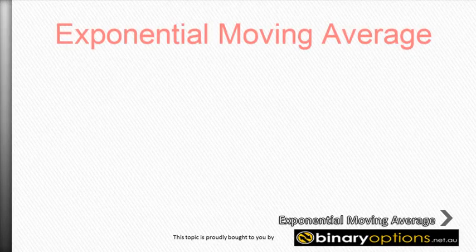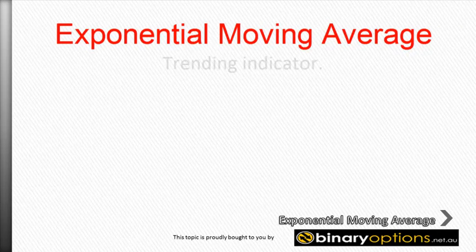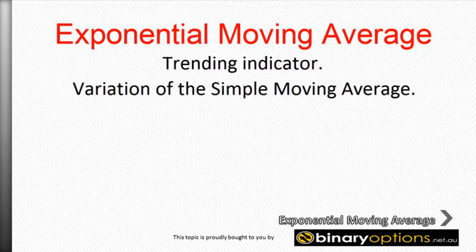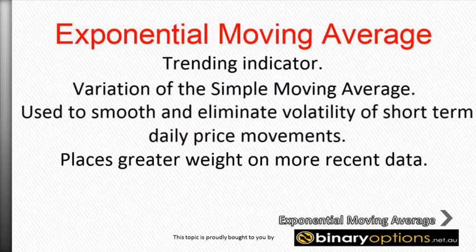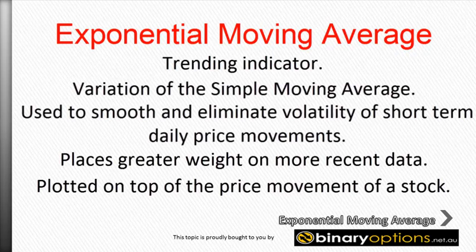The exponential moving average is a trending indicator that is a variation of the simple moving average. The EMA is a moving average which places greater weight on more recent data, to smooth and eliminate volatility of short-term daily price movements. The EMA is plotted on top of the price movement of a stock and assigns more importance to the most recent prices.